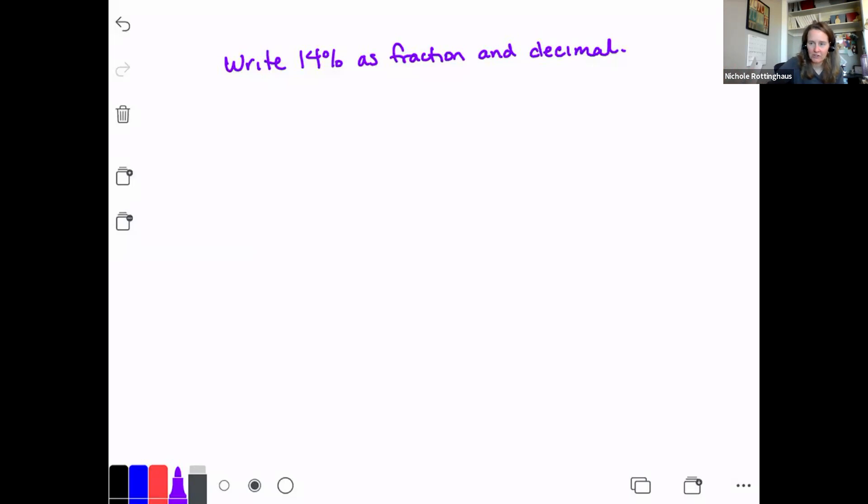To write a number as a fraction, the rule is to drop the percent sign and put the number over 100. So this becomes 14 over 100. So I'm not quite done, though, because I can reduce this. And so if I divide by 2, I end up with 7 over 50, and then that I can't reduce any further. So 7 over 50 is 14% written as a fraction.